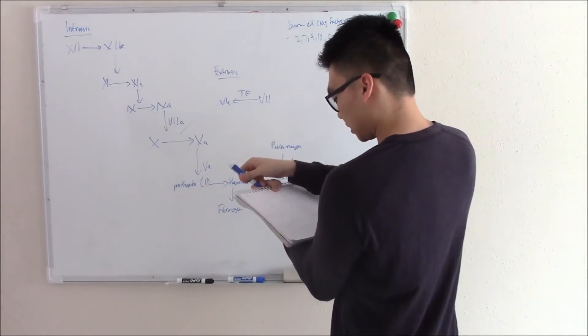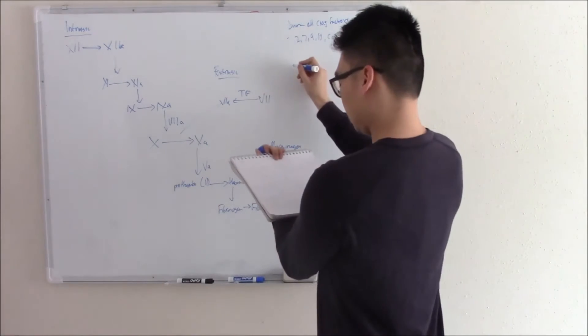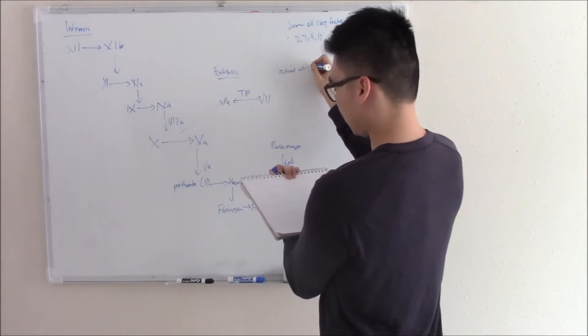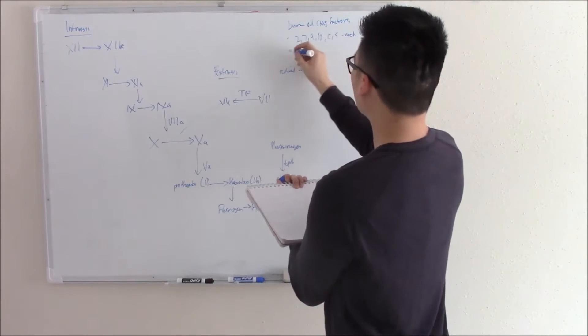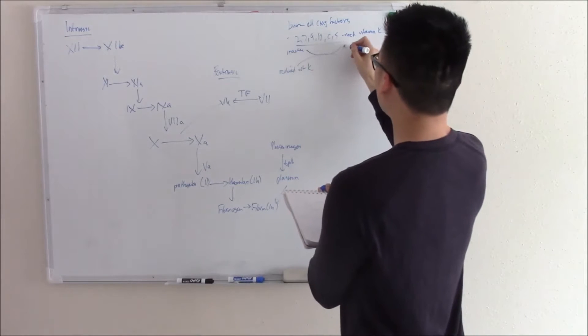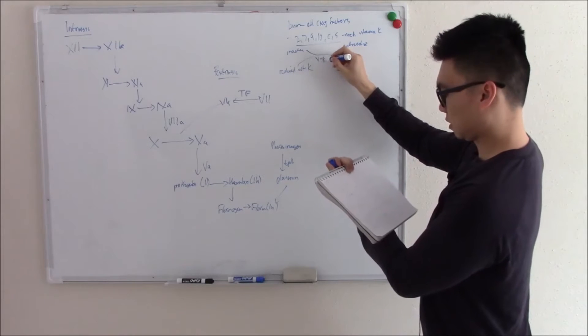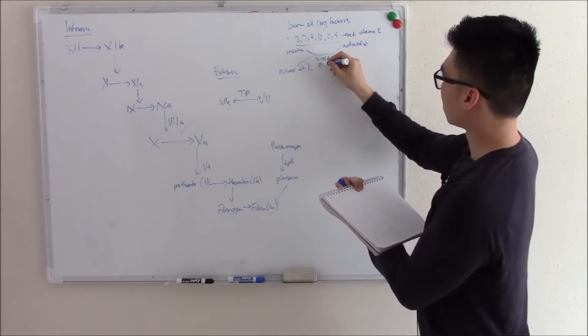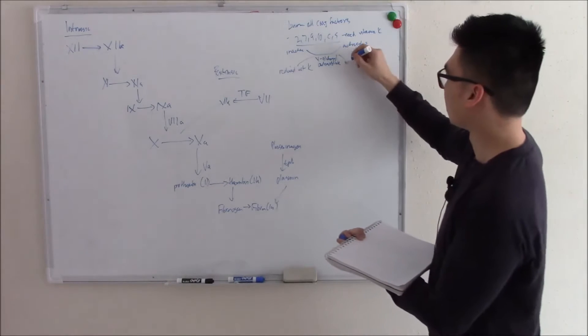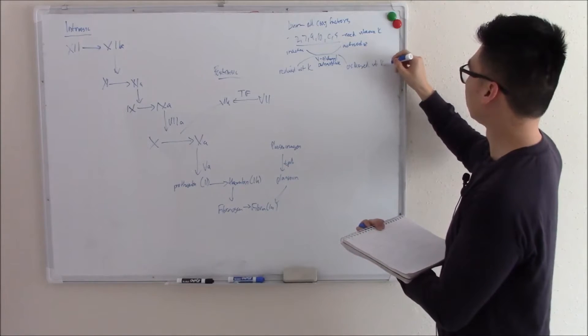It activates them because it has an enzyme called gamma-glutamyl carboxylase. So reduced vitamin K will turn inactive factors and activate them via gamma-glutamyl carboxylase. And in turn reduced vitamin K becomes oxidized vitamin K, aka epoxide.